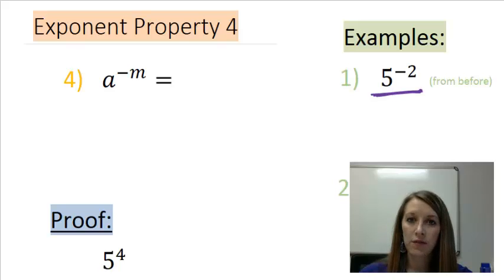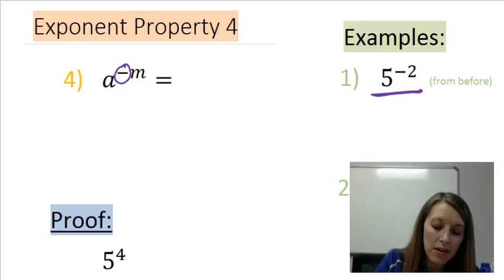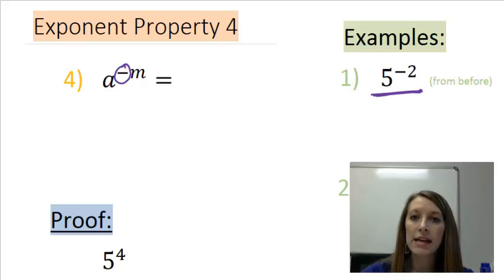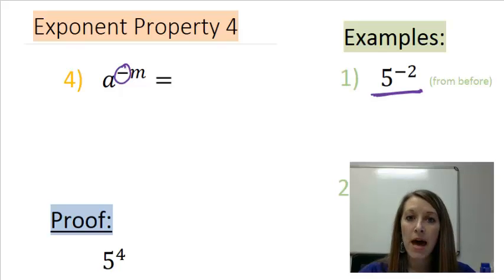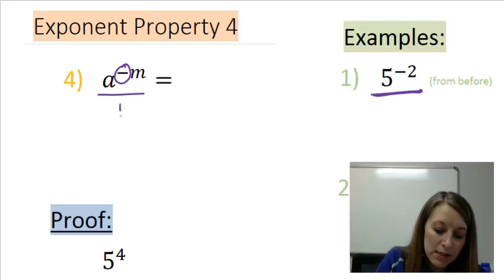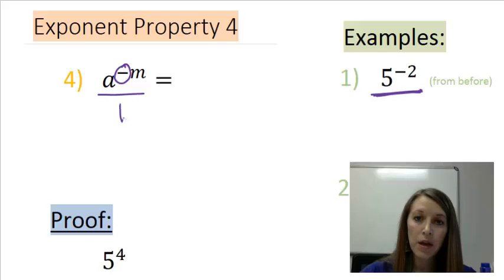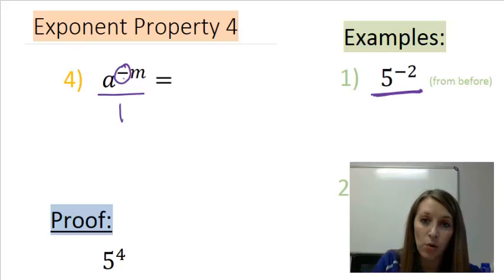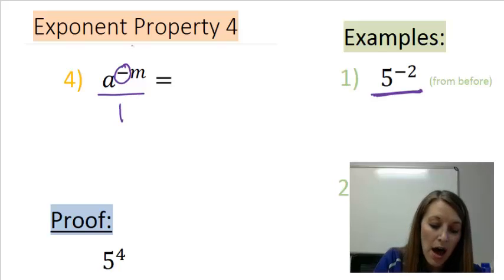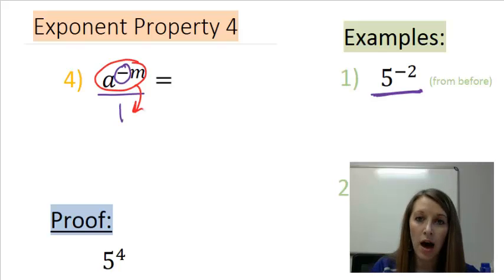If I have a negative exponent, I like to think of that as a bad attitude. I don't like to be around people with bad attitudes, so I want to get them as far away from me as possible. I like to think of this in a house situation. If I have somebody with a bad attitude on the main floor with me, I'm going to put them on a different floor to get rid of that bad attitude. I can think of this as a fraction over 1. To get rid of this bad attitude in the main floor or the upstairs version of this house, I'm going to move my bad attitude to the opposite floor.